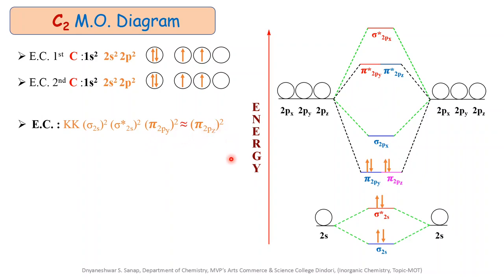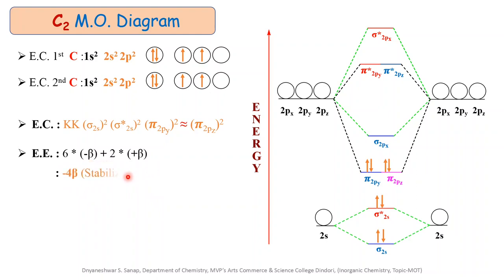The next point is the calculation of energy evolved during the formation of the C2 molecule. The energy evolved is calculated using the formula: (number of electrons in bonding MOs × −β) + (number of electrons in anti-bonding MOs × +β). Substituting the values: (6 × −β) + (2 × +β) = −4β. The stabilization energy during the formation of the C2 molecule is −4β.